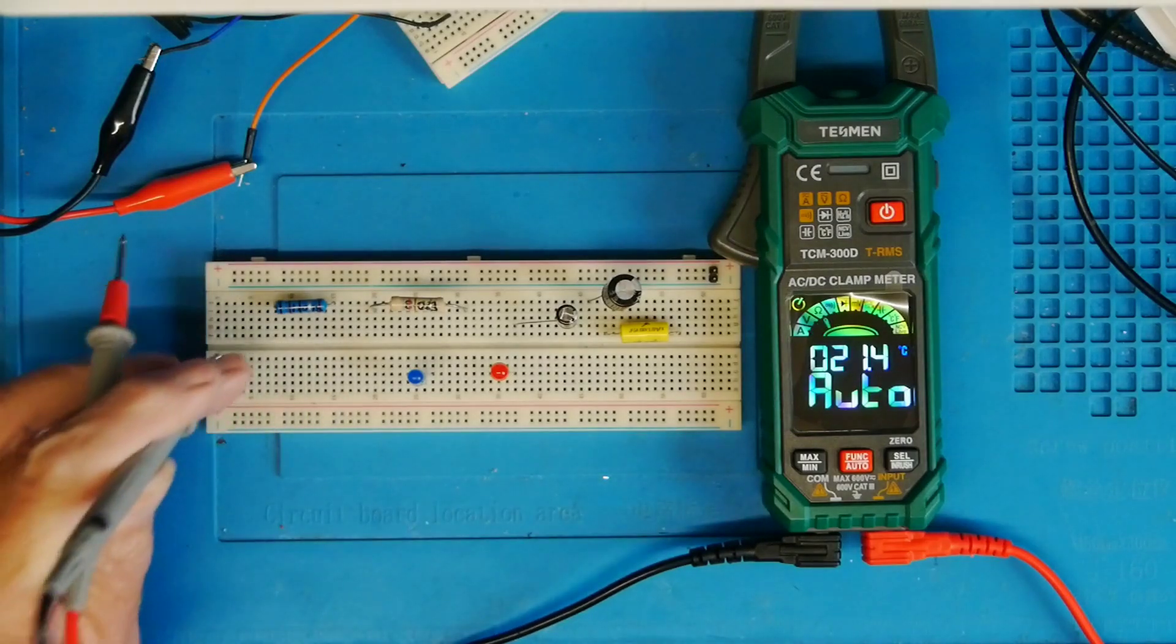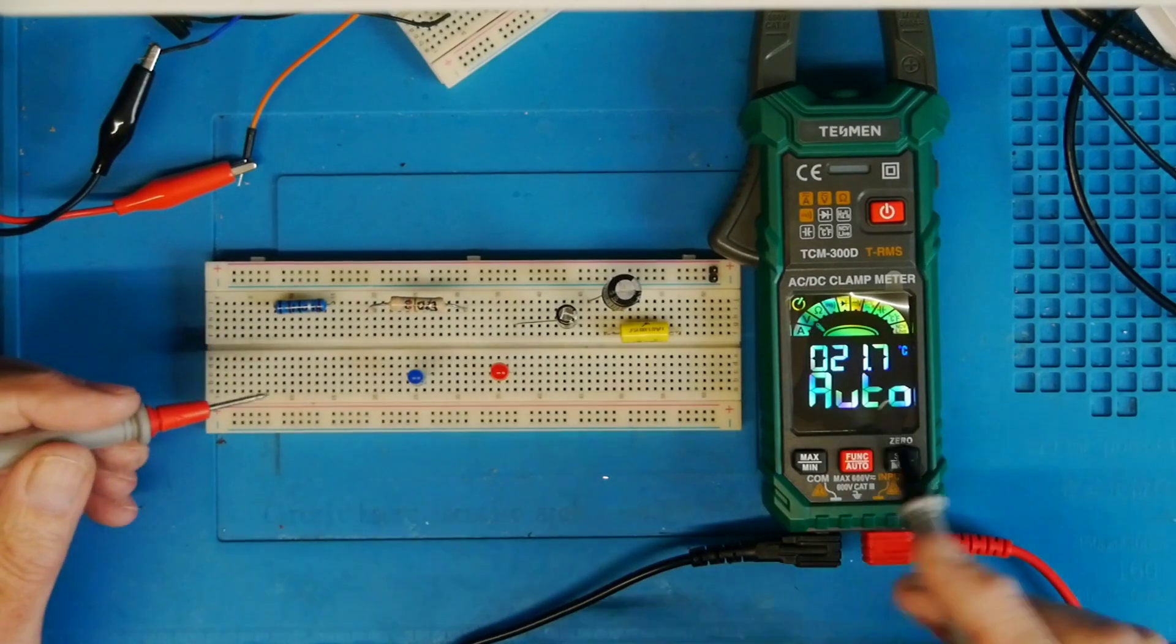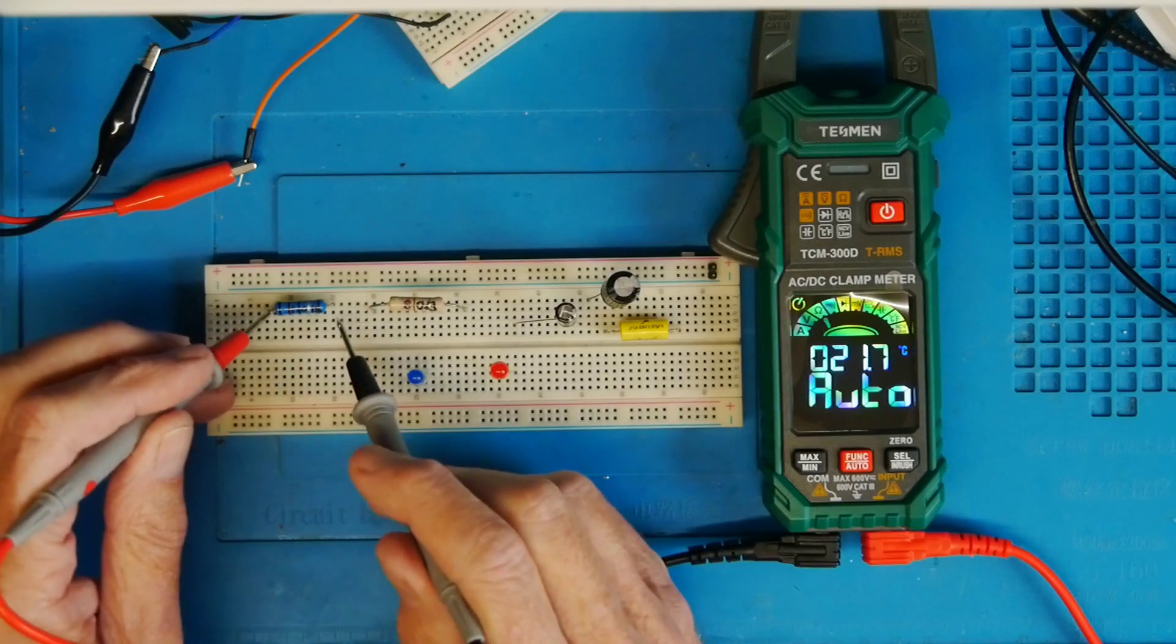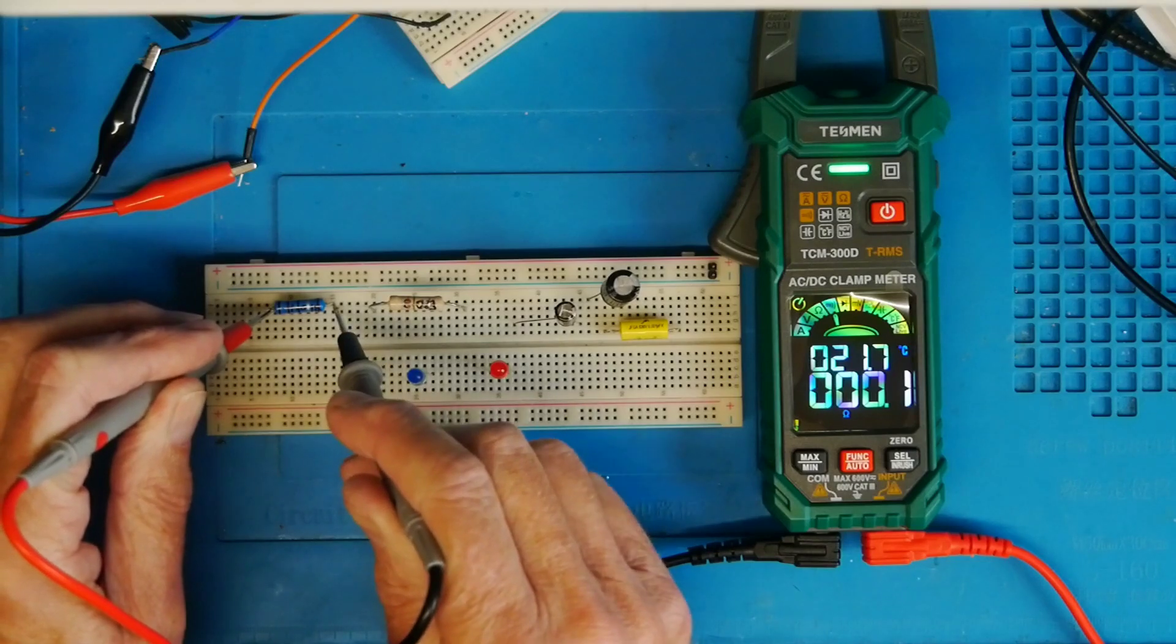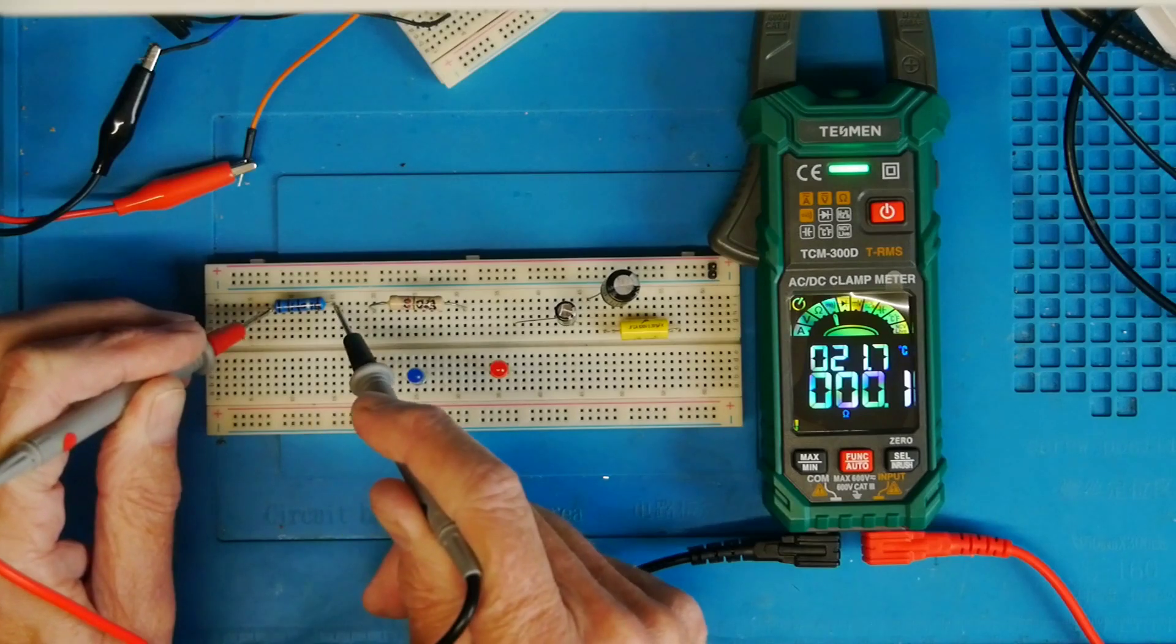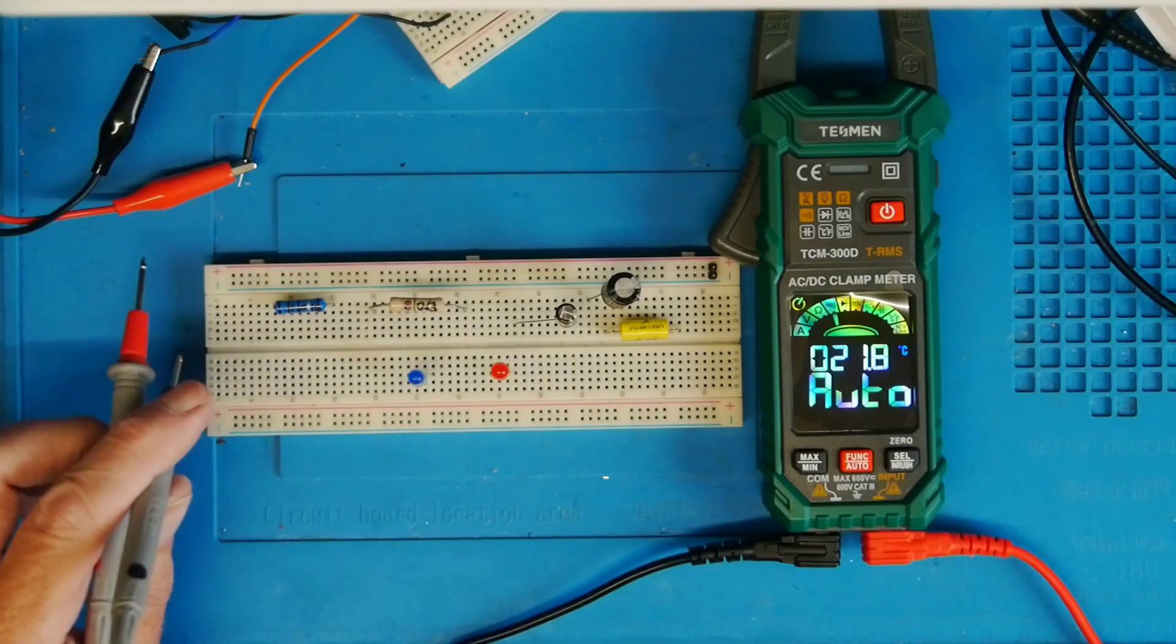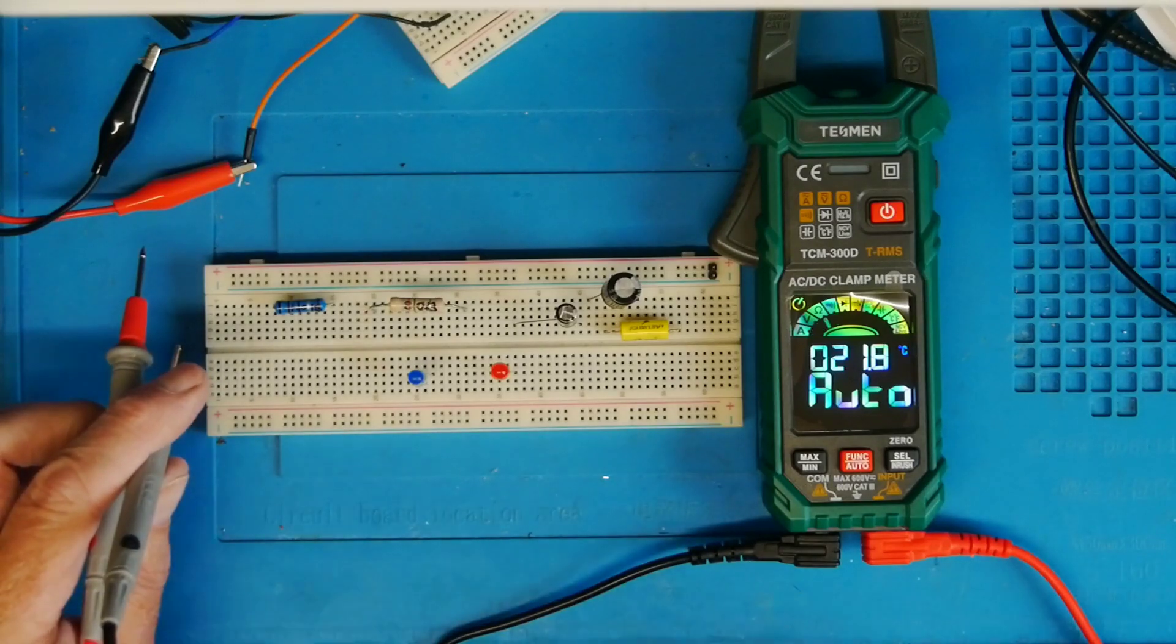Now here I've got a very low value resistor, 0.1 ohms. I want to show you what happens when the meter's in auto. If I put that on here, I get a beeping sound, the green LED comes on at the top, and it's giving me a reading of 0.1, which is correct. But it's gone into continuity test mode because it considers that pretty much a short circuit. To be fair, 0.1 ohms is not that far off.